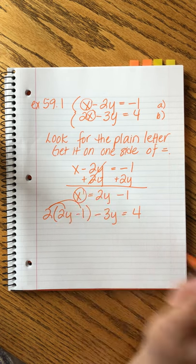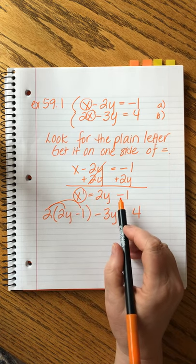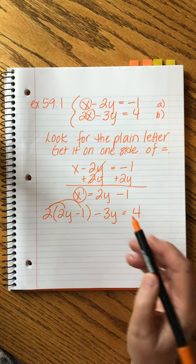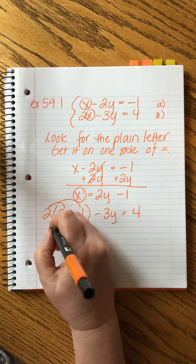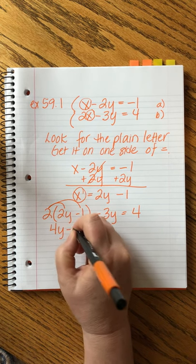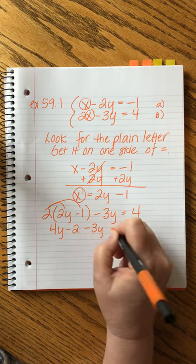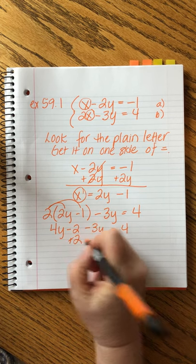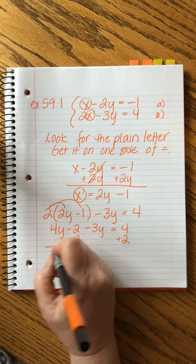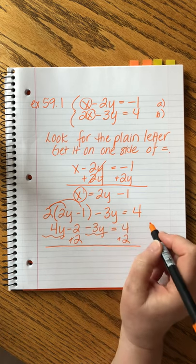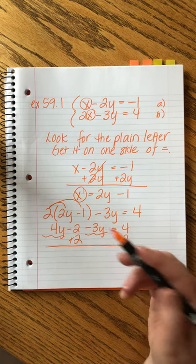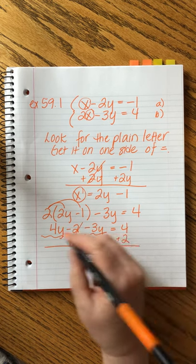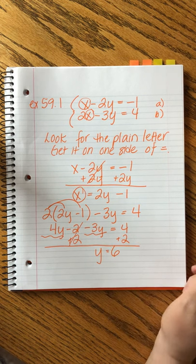Now we'll bring down equation B, creating parentheses where the X is, and then we'll fill in that. Two minus three Y equals four. And then this is two Y minus one. From here on out, it's exactly the same. There's no change. This is the interesting part where we're going to look for the plain letter and then we're going to rearrange to get it by itself. But we'll keep going. Remember now, almost always in these substitution problems, one of our first steps is to distribute, because we almost always have this scenario. 4Y minus 2 minus 3Y equals 4.